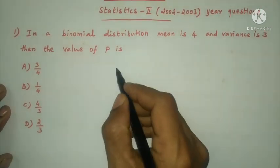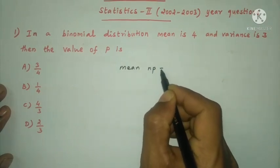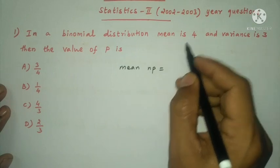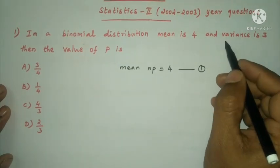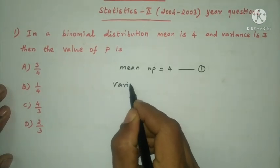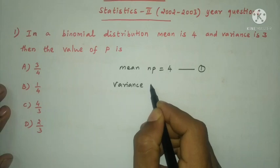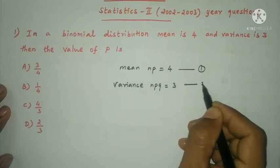For binomial distribution, mean formula is mean equal to np. np is given as 4, this is equation number 1. Variance is 3, binomial distribution variance formula is npq, npq equal to 3, this is equation number 2.